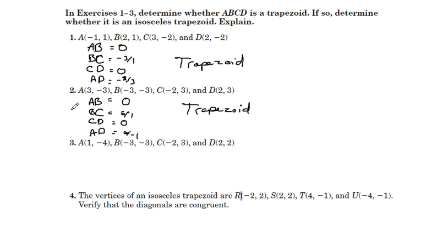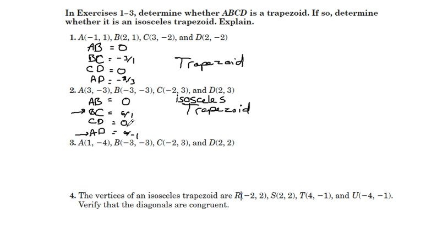Now look at the other two sides, BC and AD. The slope would be up six, right one. The slope would be up six, left one. Those two slopes are going in opposite directions — they are opposites, but the slope value is the same. That tells us it is an isosceles trapezoid. Remember, an isosceles trapezoid is a trapezoid in which the non-parallel sides are exactly the same; however, their slopes aren't the same, they're just opposites.